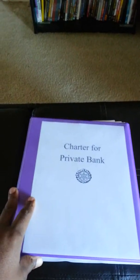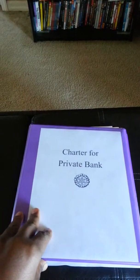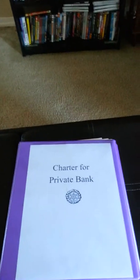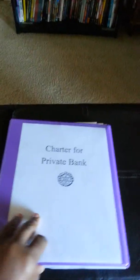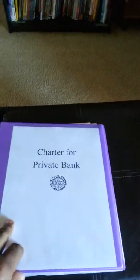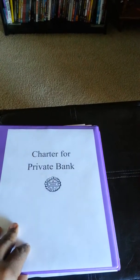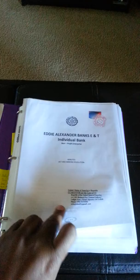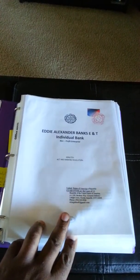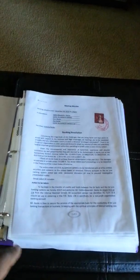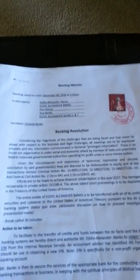I'm sharing the constructs of my Article 4 structure of a private bank, court of acts and records. I have first my charter for a private bank, which is set up and started with a banking resolution — that's my ID for my private bank.